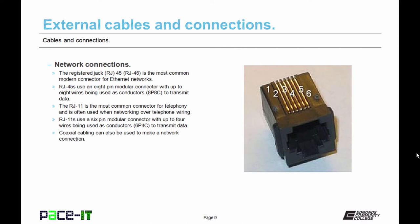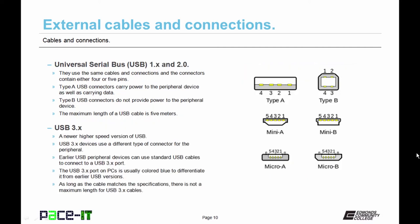Now coaxial cabling can also be used to make a network connection. But it's not very common in today's local area network environment. So let's talk about USB versions one and two. That's the universal serial bus connector. Versions one and two use the same cables and connections. The basic types of connectors are broken out into type A and type B connector.